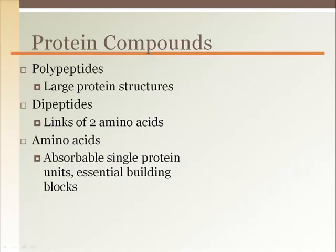Proteins are large molecular structures that are made of many, many amino acids linked together. The shape or configuration of the amino acid structure determines the type of protein that it is. The large protein structures are called polypeptides.